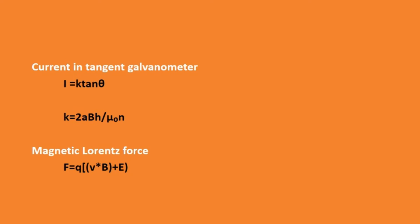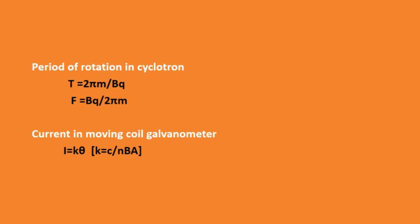Next is the magnetic Lorentz force: F equal to Q(E plus v × B). This equation shows the total force on a moving charge in the presence of electric field E and magnetic field B. Next is the period of rotation in a cyclotron. A cyclotron is used to accelerate particles to high energies. The time period is T equal to 2·pi·M by QB, and frequency F equal to QB by 2·pi·M.